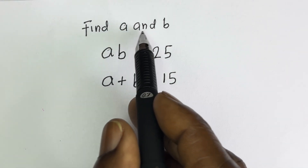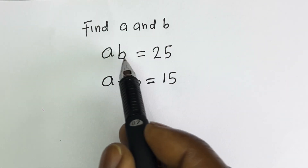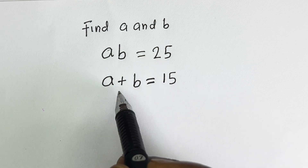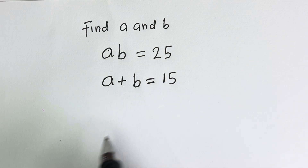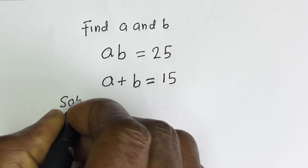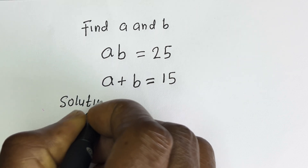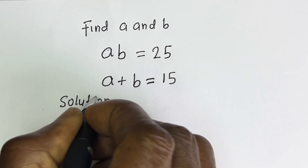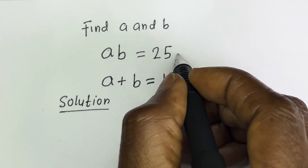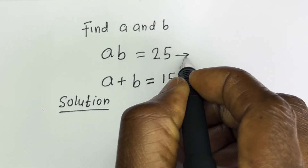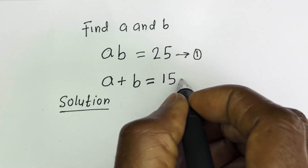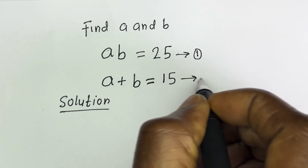Hello. How to find the value of a and b from this equation: ab is equal to 25, and a plus b is equal to 15. Let's call ab = 25 equation 1, and a plus b = 15 equation 2.